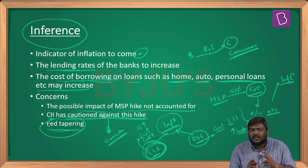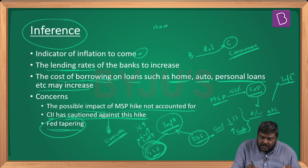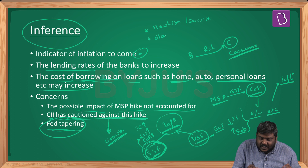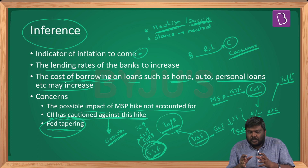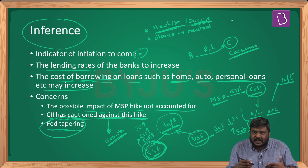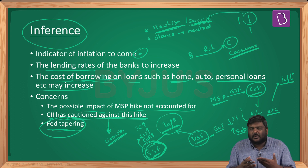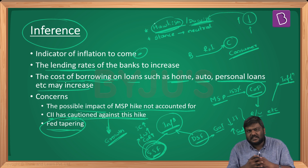Two important terms frequently seen in newspapers: hawkish and dovish. If the monetary policy committee wants to increase the flow of money, they will reduce lending rates — this is called a dovish monetary policy. If they want to control the flow of money and increase lending rates, it is referred to as a hawkish monetary policy or stance.